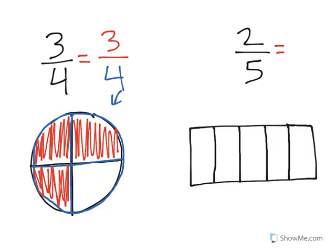Now let's do the same thing with 2 fifths. As you can see over here, I've already broken up this rectangle into 5 equal pieces. Those 5 pieces represent the denominator, which is 5, for the shape broken into fifths.